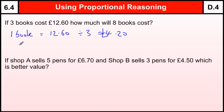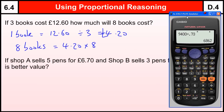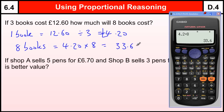To find out how much eight books cost, we do £4.20 times eight, because one book costs £4.20 and eight books would cost that. So let's get the calculator out and multiply those together to get £33.60.